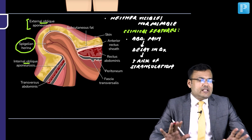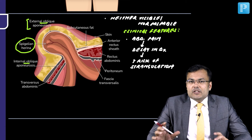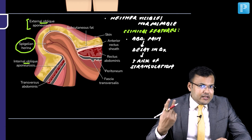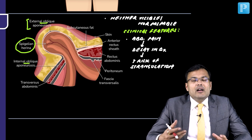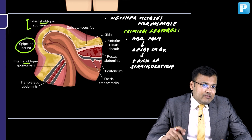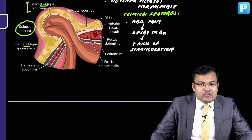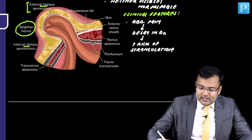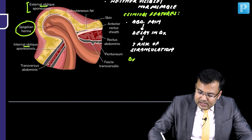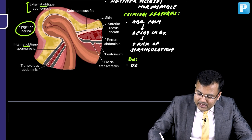We discussed that the diagnosis of hernia is clinical, but there are two exceptions: internal hernia, and hernias which are neither visible nor palpable — spigelian hernia. Since you cannot make the diagnosis clinically here, how are we going to make the diagnosis? Diagnosis is made by ultrasound or CT.